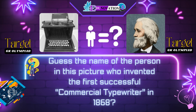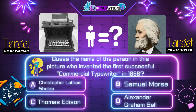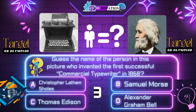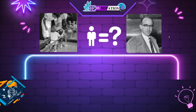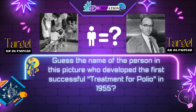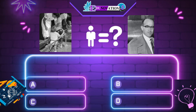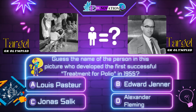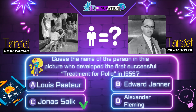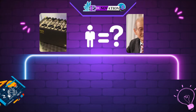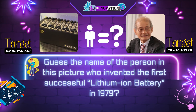Next question. Guess the name of the person in this picture who developed the first successful treatment for polio in 1955. Your options are: A. Louis Pasteur, B. Edward Jenner, C. Jonas Salk, D. Alexander Fleming. Time's up. Correct answer is C. Jonas Salk.